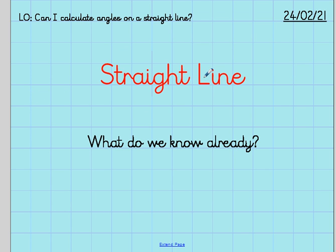We then looked at specifically a straight line and what we already know. So we already know, we said, that a straight line has 180 degrees. That's really important for today's lesson.